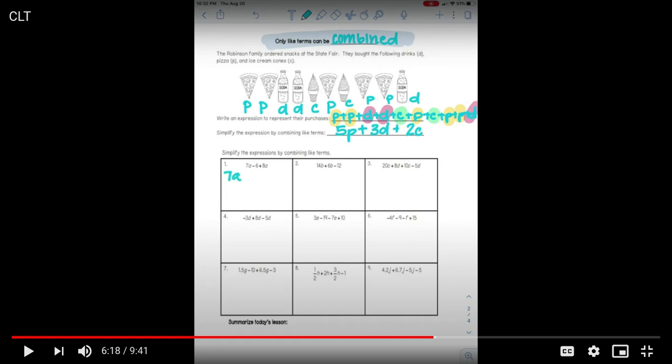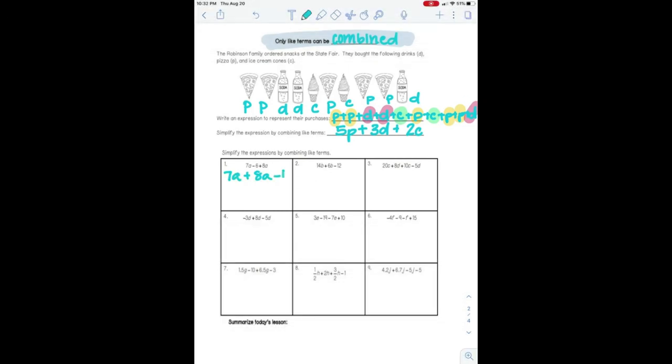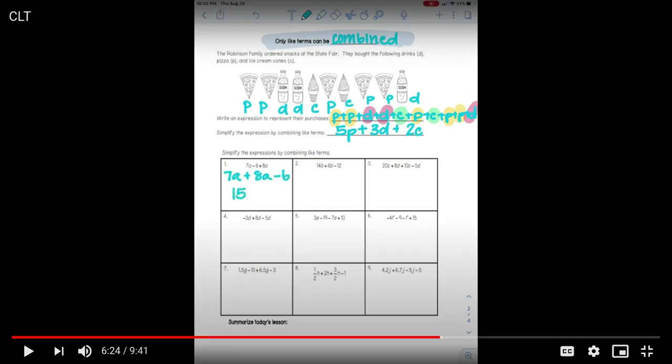So I'm going to do some examples down here and then you guys are going to do some on your own. So for number one, I've got 7A minus 6 plus 8A. And when I do these, I like to rewrite them so all my variables are next to each other. You by no means have to do that. Okay. If you don't want to do that, you do not have to. I am just telling you that it will make you make way fewer mistakes and it'll make it easier for you. Okay.